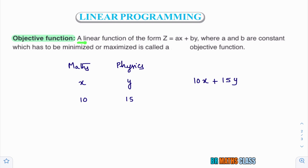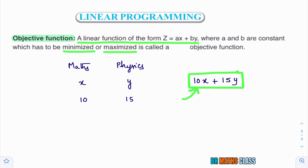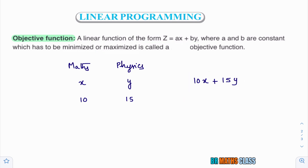You observe here — what is objective function? A linear function of the form z = ax + by which is to be minimized or maximized. Generally, profit means we want to maximize the profit. So here, this is called objective function. Throughout this chapter, we'll use this word objective function. It is a linear function of the form ax + by which is to be maximized or minimized.